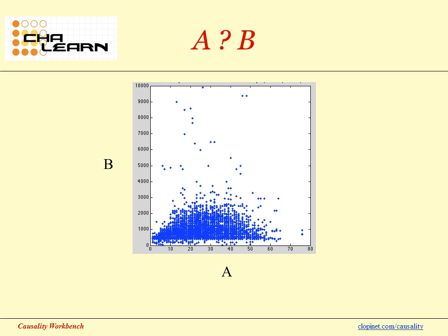Here's another example. Does A cause B, or B cause A? Here's the answer: B is wages and A is age, so it's A causes B.